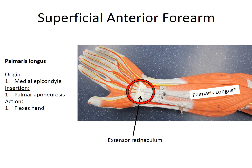Recalling what we've established: muscles that flex originate on the medial epicondyle of the humerus, and muscles that extend originate on the lateral epicondyle of the humerus. The palmaris longus, being a flexor, originates on the medial epicondyle — continuing this pattern. Keep this in mind as a study tool.